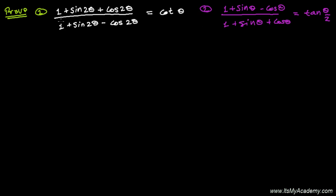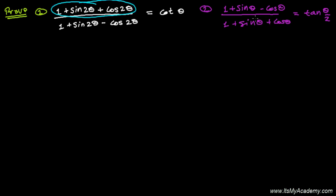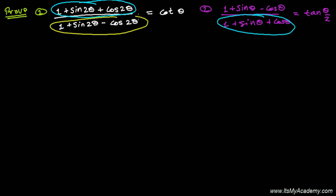Here I have two quite similar questions. In the first question, by solving the left-hand side I need to prove cot theta. Similarly, in the second question, by solving the left-hand side again I need to prove tan(theta/2). The difference is only here: in the first question cosine is plus and here cosine is minus, and here cosine is minus and cosine is plus. It's just swapped between the two questions, and next difference is here we have 2 theta, here we have theta.